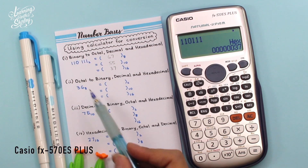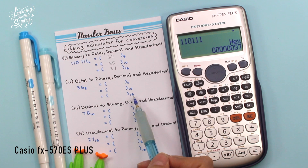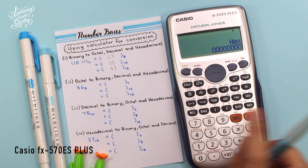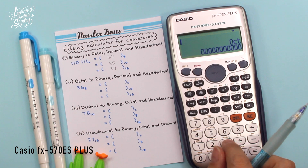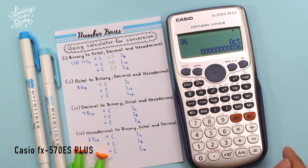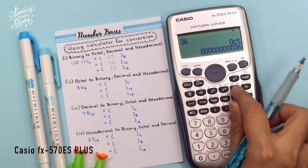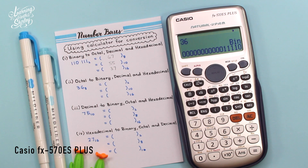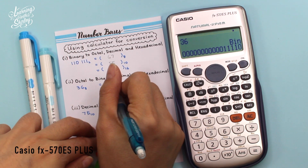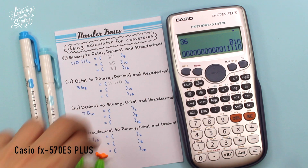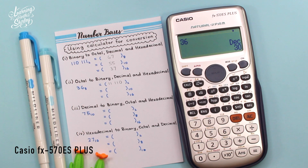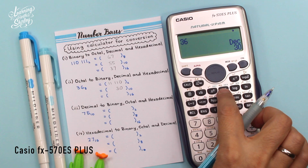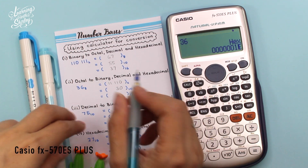Next, I'm going to convert OCT — base 8 to base 2, base 10, and base 16. I press OCT and enter 36, then press equals. To change to base 2 (binary), press BIN — the answer is 111110. To change to base 10, press DEC — it's 30. And for base 16 (hexadecimal), press HEX — it's 1E.